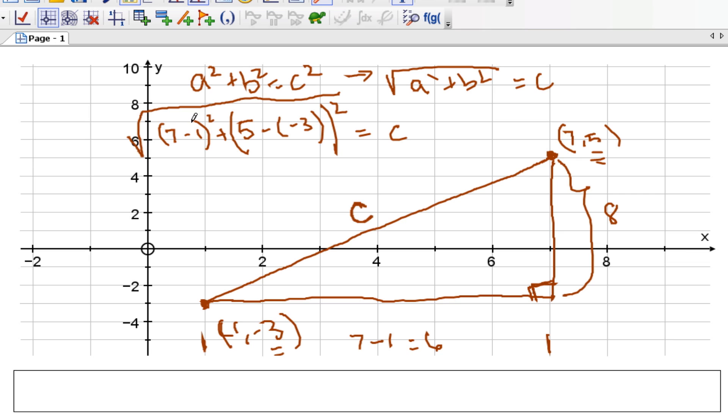And so I take the difference of the x's squared, which is 6 squared, plus the difference of the y values, which is 8 squared. If I square root it, I get my distance, which I called c. Well, I get 36, plus 64, which is c. 36 plus 64 is 100. Square root of 100 equals 10 is my distance of c.